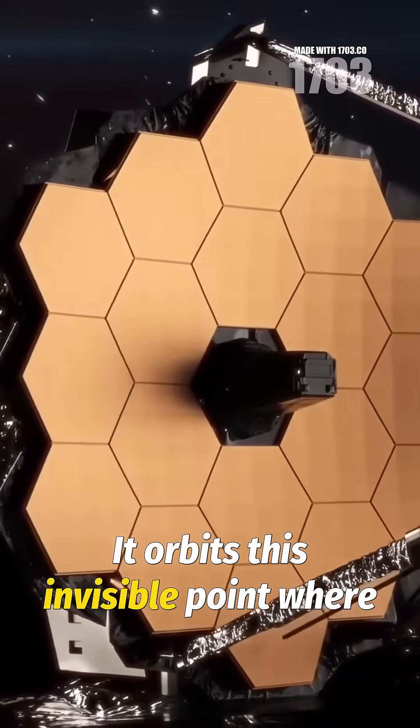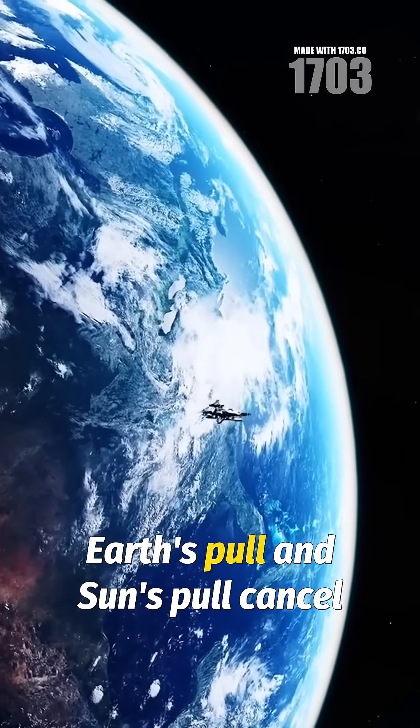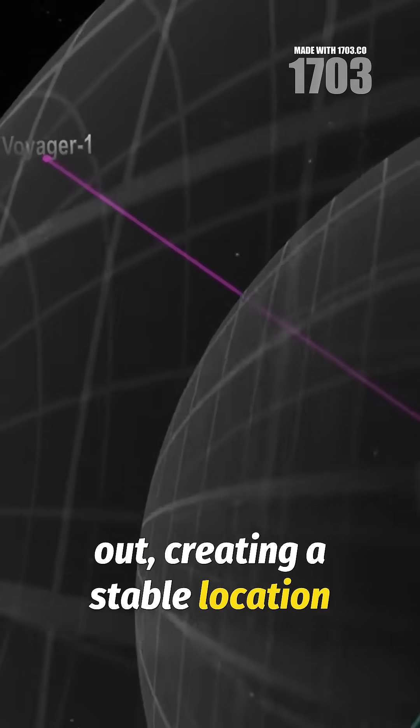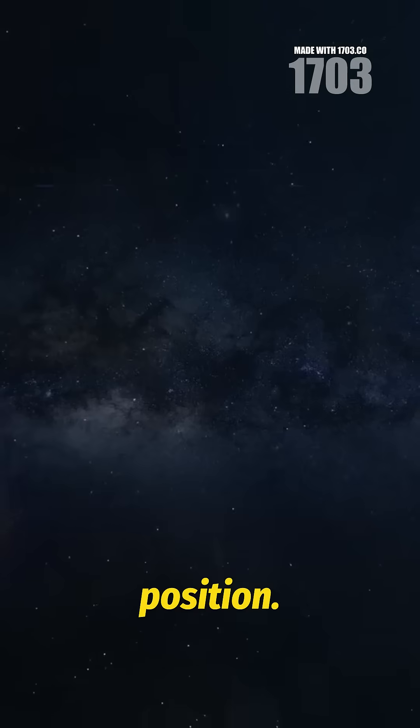It orbits this invisible point where Earth's pull and Sun's pull cancel out, creating a stable location requiring minimal fuel to maintain position.